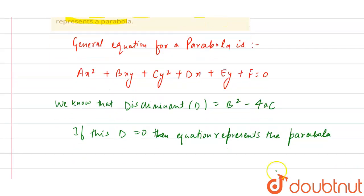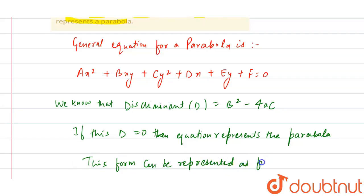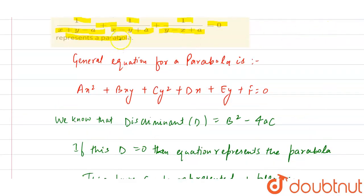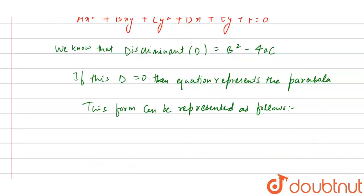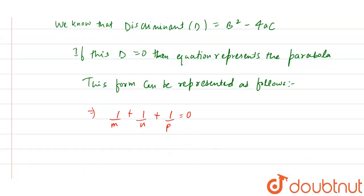We can represent this form as follows. Taking the given equation — 1 by (x plus y minus a) plus 1 by (x minus y plus a) plus 1 by (y minus x plus a) — as 1/m plus 1/n plus 1/p equals 0, we simplify to get: mn plus mp plus np equals 0.